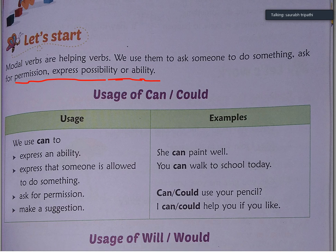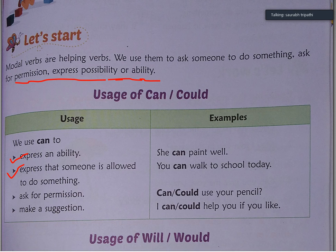Usage of CAN and COULD: We use 'can' to express an ability — किसी ability को show करने के लिए हम 'can' का use करते हैं। Express that someone is allowed — किसी person को कुछ allowed करने के लिए use करते हैं। जैसे कि ability show करने के लिए sentence है: 'She can paint well' — यह उसकी ability है कि वो paint कर सकती है। Ability means योग्यता, qualities।